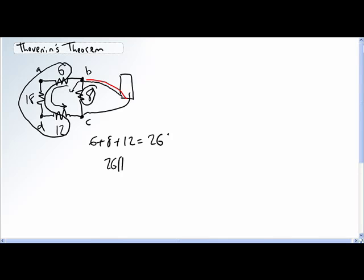So now that's in parallel with an 8. So 26 times 8 divided by 26 plus 8, 6.118 ohms.